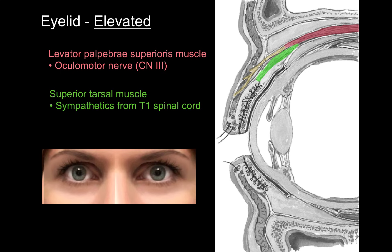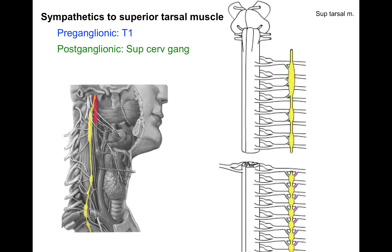If you knock out either one of these — the oculomotor nerve (CN3) or sympathetics coming up to the head — it results in a droopy eyelid. That's called ptosis, P-T-O-S-I-S.